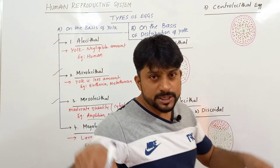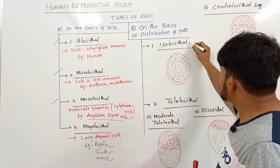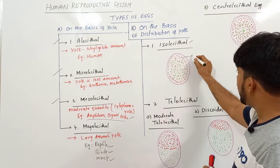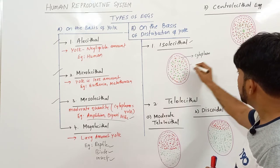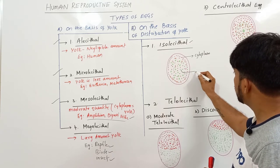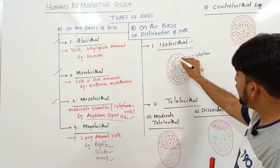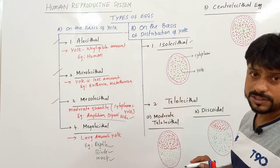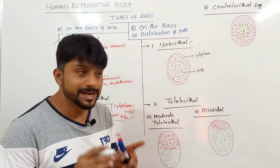Next, based on the distribution of yolk — Isolecithal. In the egg, this is the entire cytoplasm, and these green structures represent yolk. Yolk is distributed completely evenly in the cytoplasm. That is called Isolecithal. This is possible if the amount of yolk is less or negligible.